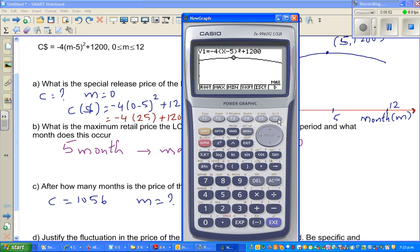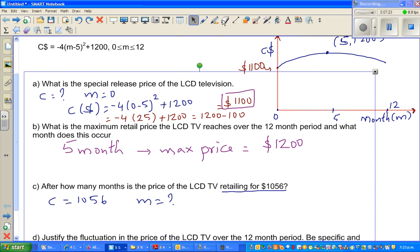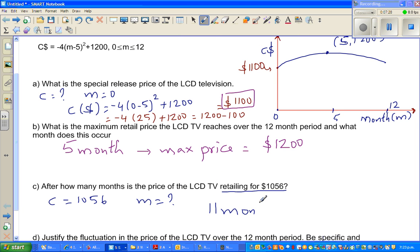Go to gsol and then you press F6 and then you press F2, which is X calc. X corresponds to the month. So F2 and they're asking you what's your Y value, which is your C, which is 1056. So in the 11th month you got the price of 1056. Now how to do this algebraically?